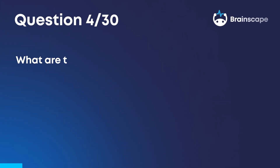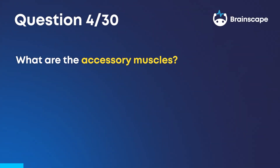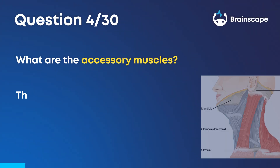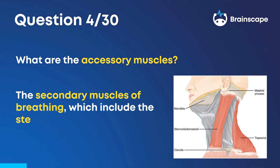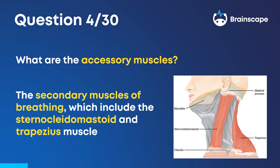Question 4. What are the accessory muscles? The secondary muscles of breathing, which include the sternocleidomastoid and trapezius muscles of the neck.